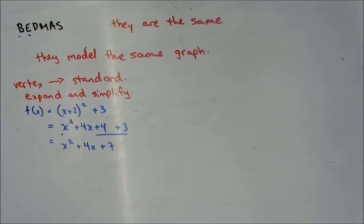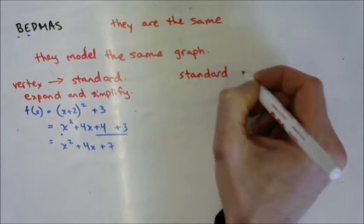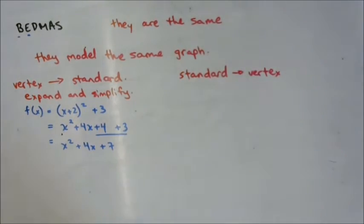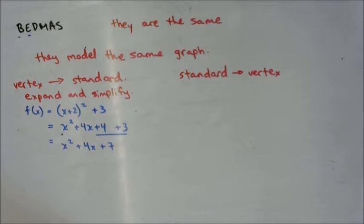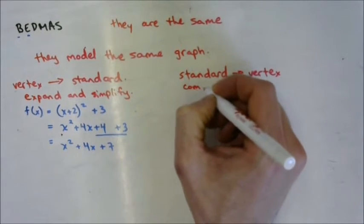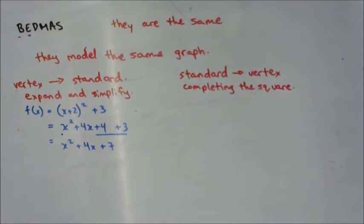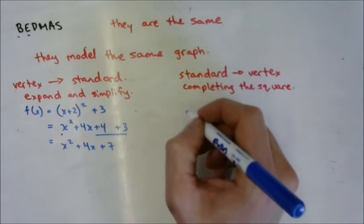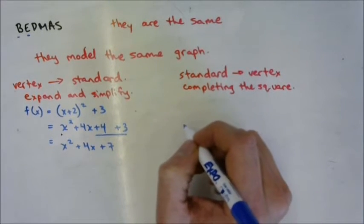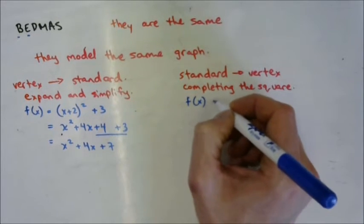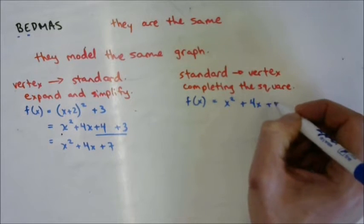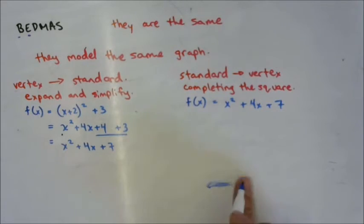But how do we go from standard to vertex? That strategy is called completing the square — grade 10, lesson 6.1. So we've got x² + 4x + 7, and we know we want it to look like (x + 2)² + 3.